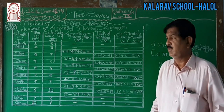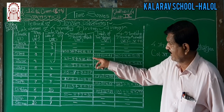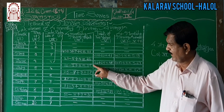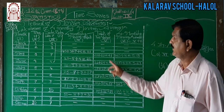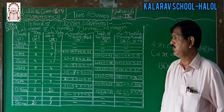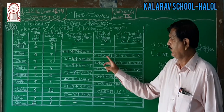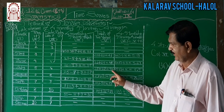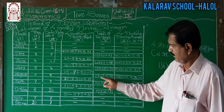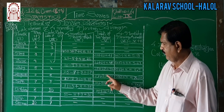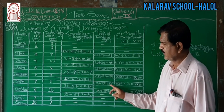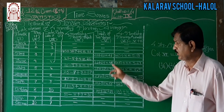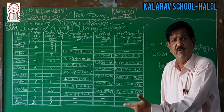Next, we take the total of 2 consecutive moving totals, written at the center. So 21 and 20 give 41; 20 and 25 give 45; 25 and 27 give 52; 27 and 31 give 58; 31 and 35 give 66; 35 and 36 give 71. These are the totals of 2 consecutive 4-item moving totals.